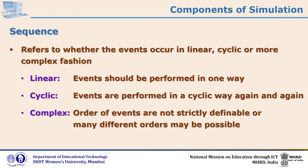Even the sequence of events is important in simulation. This sequence refers to whether the events occur in a linear, cyclic, or more complex fashion. There may be a situation where the entire sequence of events is linear. Or there may be a cycle of events where events occur again and again. There may also be complex situations where the order of events is not strictly definable, or where many different orders are possible.